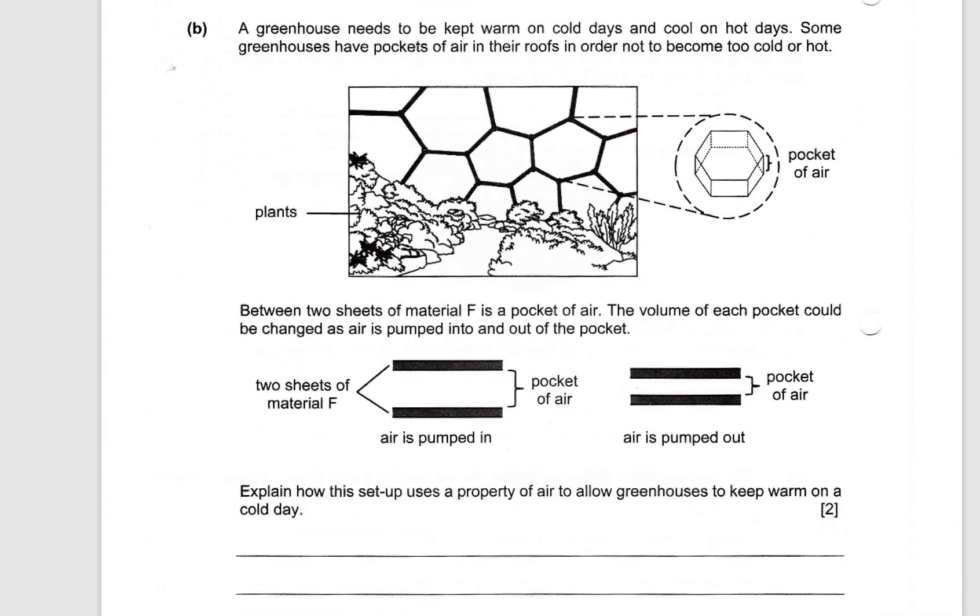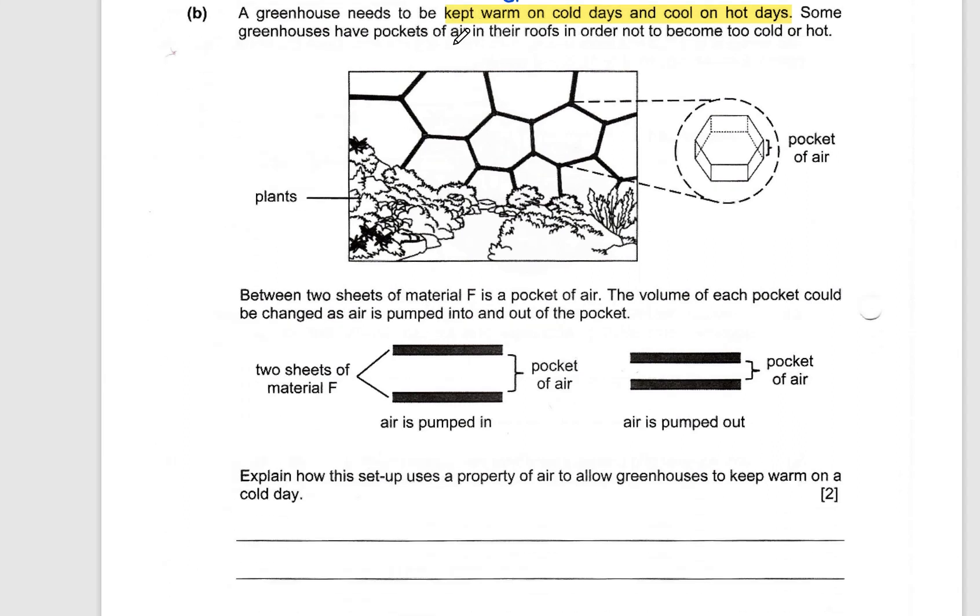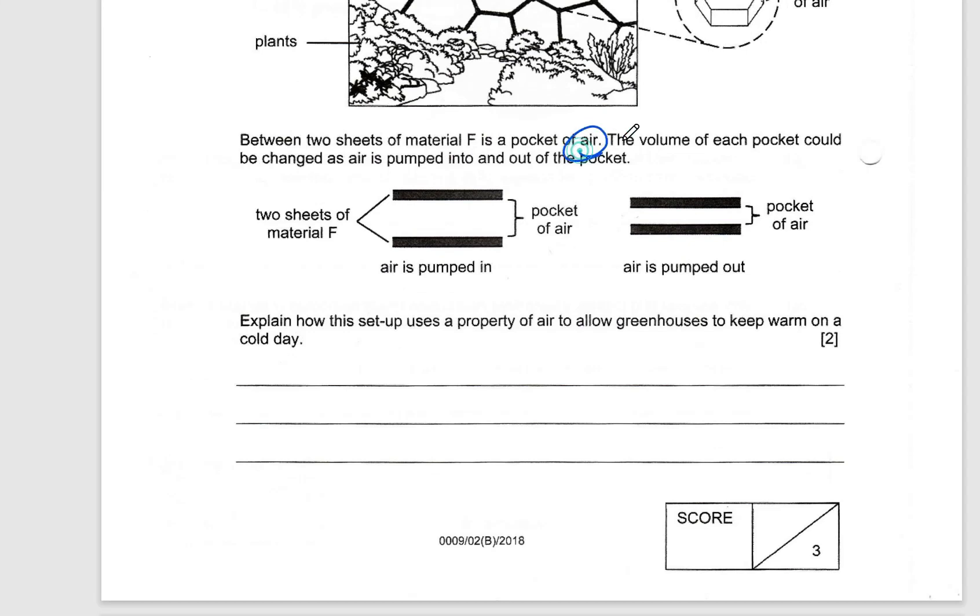The next one is where it's a bit harder. A greenhouse needs to be kept warm on cold days and cool on hot days. Now if I want to keep warm on cold days and cool on hot days, basically what I'm trying to do is I'm trying to slow down the heat flow. So some greenhouses have pockets of air in their roofs in order for them to not become too cold or too hot. So between the two materials, we have a pocket of air. The word air appears a lot, even in the pictures itself. So the volume can be changed as air is pumped in and out of the pocket. Explain how this setup uses a property of air to allow them to keep warm on a cold day.